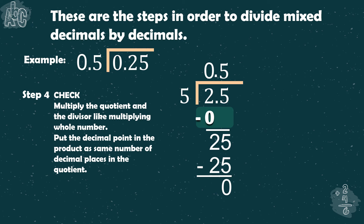Step number 4 is to check. Multiply the quotient and the divisor like multiplying whole numbers. Put the decimal point in the product with the same number of decimal places as in the quotient.